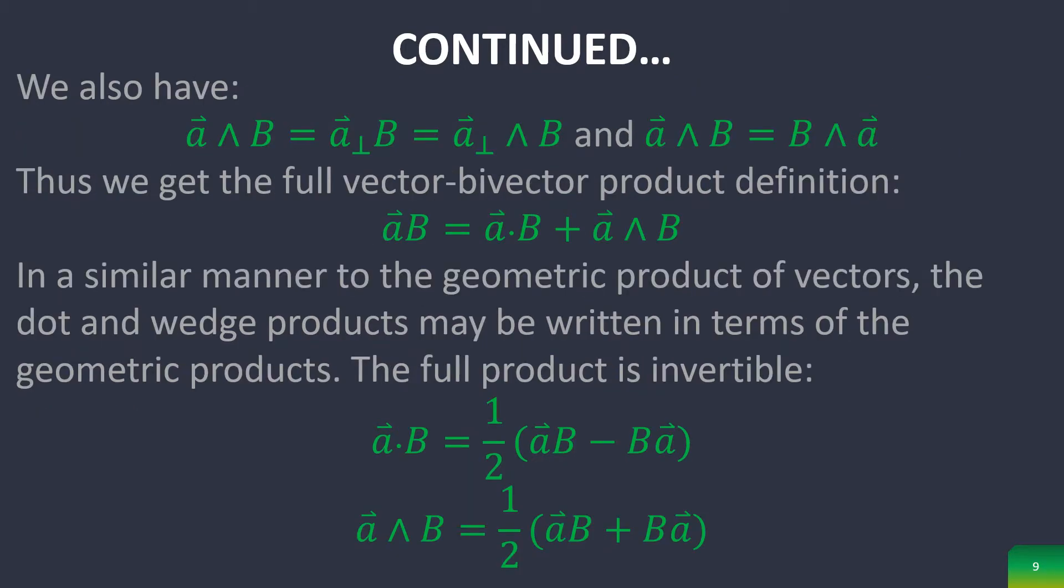This gives us the full vector-bivector definition when we product them together. And just like the geometric product of vectors, it can be represented in these two decompositions. And it's also useful to know that this full product is invertible.